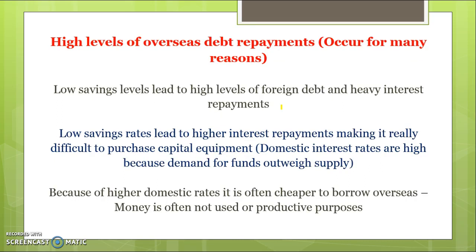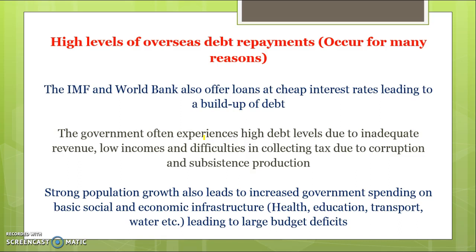Another reason for high debt levels is low national savings. Because of a lack of savings, developing countries often borrow from overseas, where it can be cheaper to access credit since getting credit domestically can be very difficult. This leads to higher interest repayments, making it hard to purchase capital equipment. Because of high domestic interest rates, borrowing overseas is often cheaper, but if the money is wasted through corruption or not directed toward productive purposes, it causes real problems. The IMF and World Bank also offer loans at cheap interest rates, but this too leads to a build-up of debt. High debt also stems from a lack of tax revenue — related to corruption, subsistence production, and high levels of cash-economy activity and bartering.